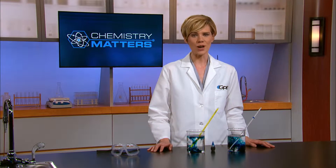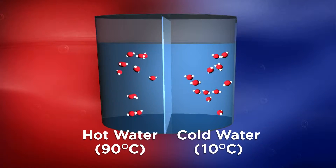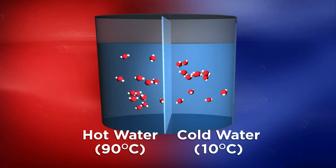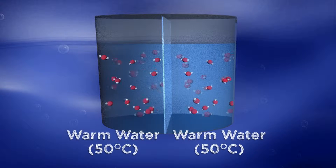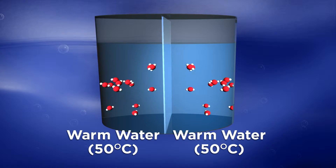Measuring temperature allows us to predict in which direction heat will flow, which is always from a substance with a higher temperature, or more molecular movement, to a substance with a lower temperature — that is, a substance with lower molecular movement. Here you see faster-moving hot water molecules slow down as some of their energy is transferred to the colder water molecules, which are now moving faster. We'll investigate the relationship between a change in temperature and heat transferred later in this unit.